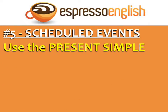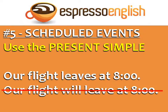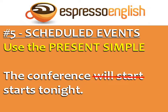For scheduled events in the future, use the present simple. Scheduled events are things like transportation schedules, conferences and events, and things that operate on a regular schedule like the opening or closing of a store or bank. So it's more common to say 'Our flight leaves at eight o'clock' instead of 'Our flight will leave at eight o'clock.' Similarly, 'The conference starts tonight,' not 'The conference will start tonight,' because it's a scheduled event.